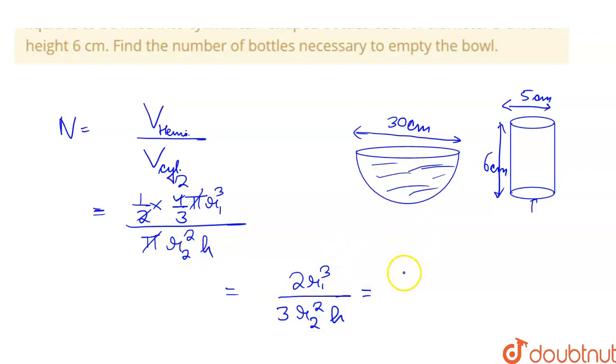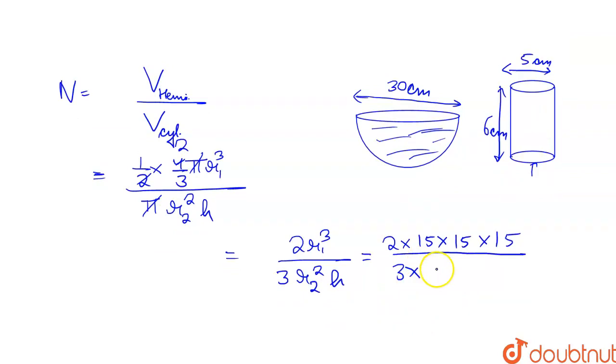How much is r1? 15 cm. So 2 into 15 into 15 into 15, 15 cube basically, upon 3 into the radius 2.5 because diameter is 5. Basically we have to write it 5 by 2.